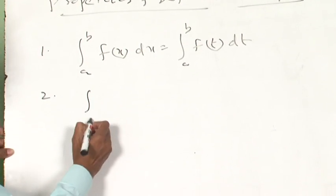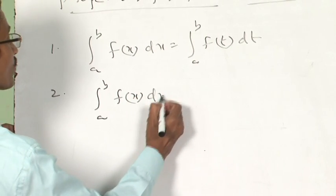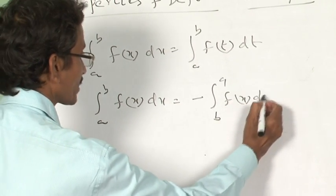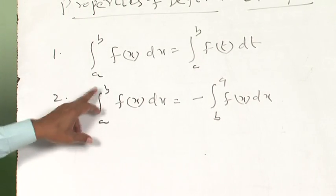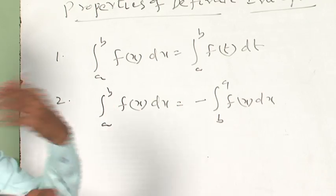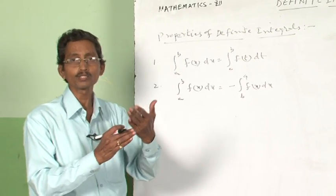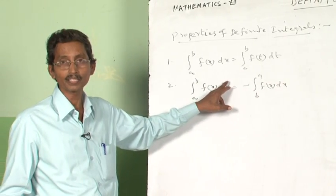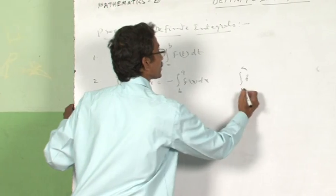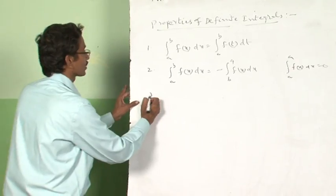Property 2: the integral from a to b of f(x) dx equals minus the integral from b to a of f(x) dx. By changing the limits — swapping the upper and lower limits — the sign becomes negative. In particular, the integral from a to a of f(x) dx is clearly 0.